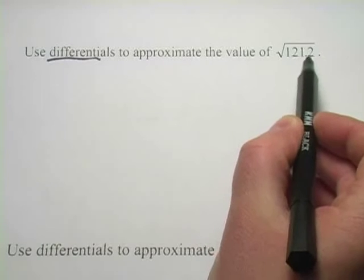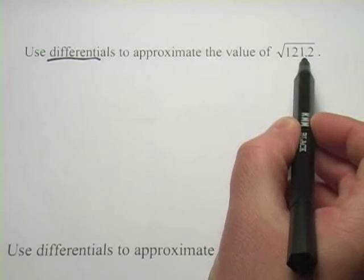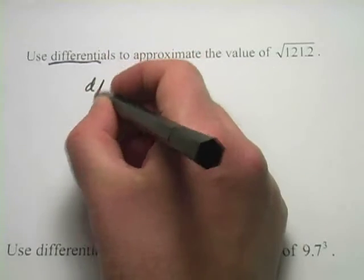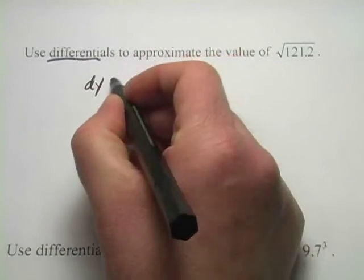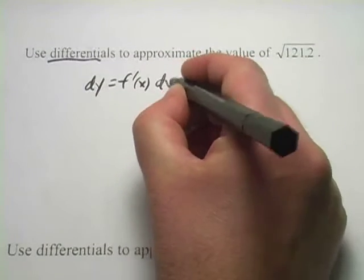The differential in the x here is 0.2 from our base of 121, and then we can find out what the differential in y would be. Remember, when we learned about differentials, we said that the differential of y was the derivative of the function times the differential in x.